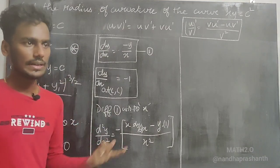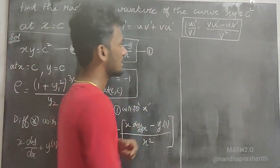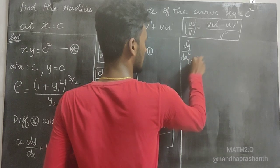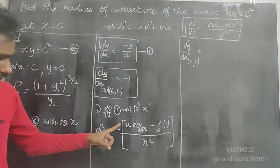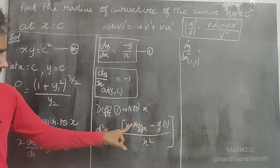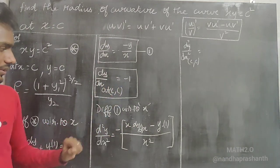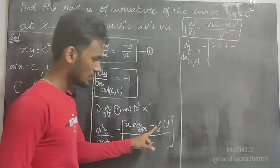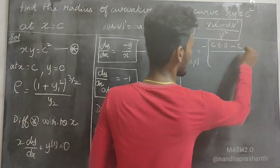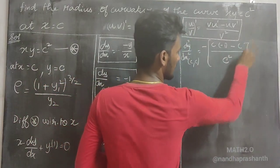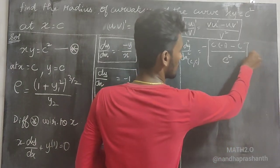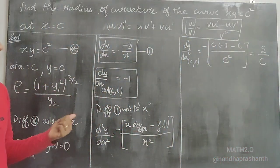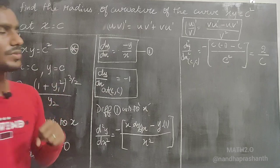At point (c, c), substituting into the second derivative: d²y/dx² = [c·(−1) − c] / c² = −2c / c² = 2/c. So the second derivative at point (c, c) is 2/c.